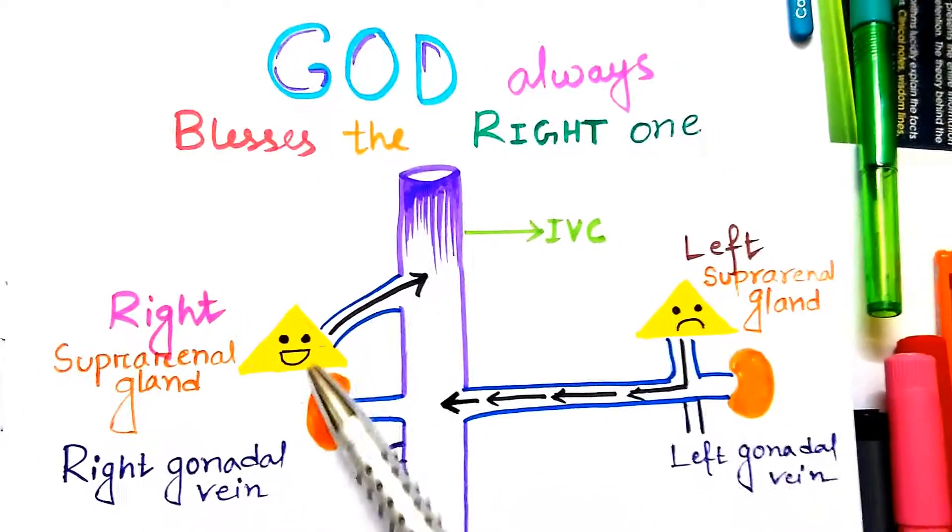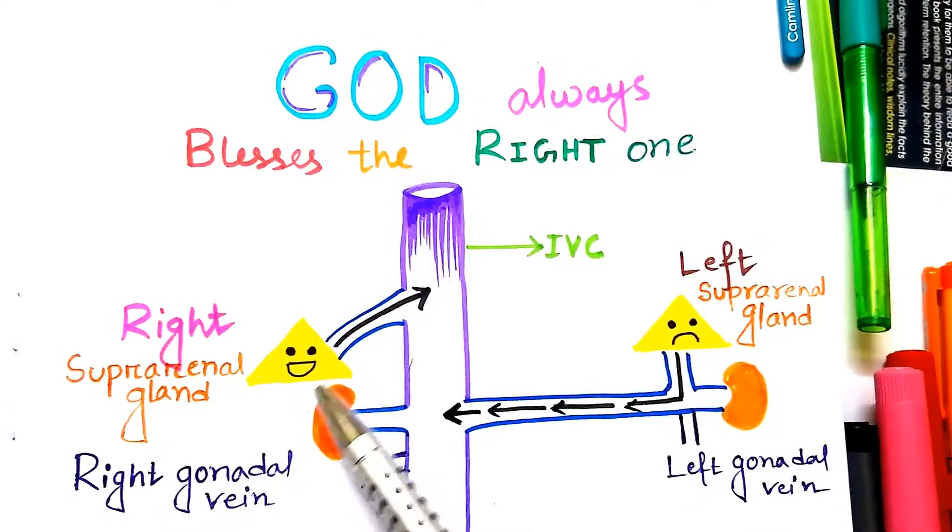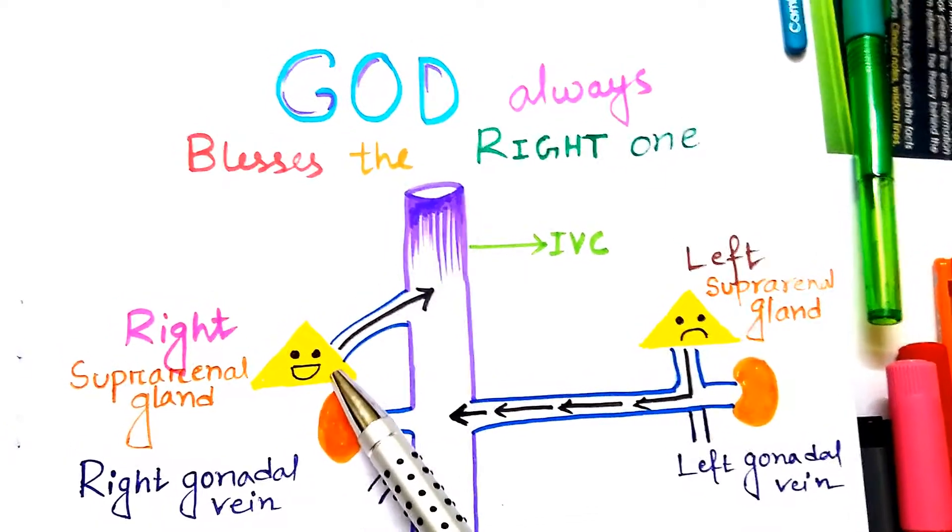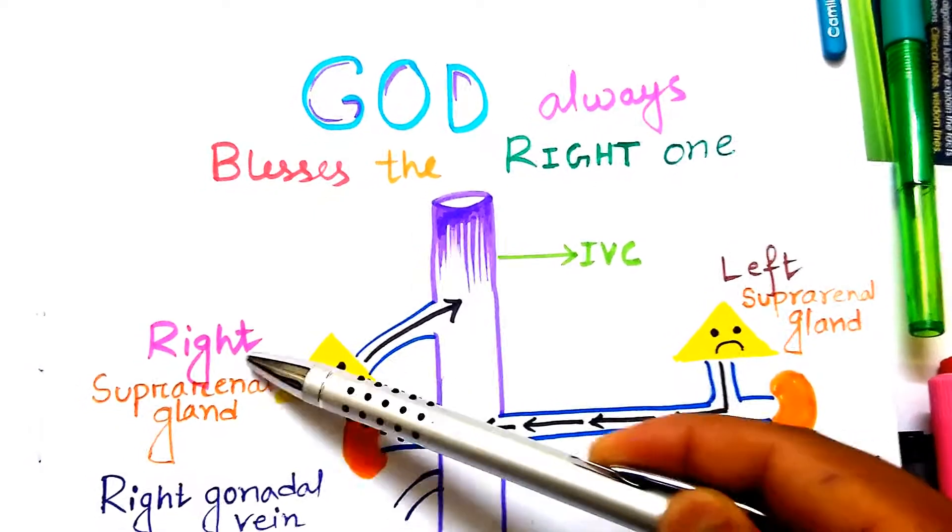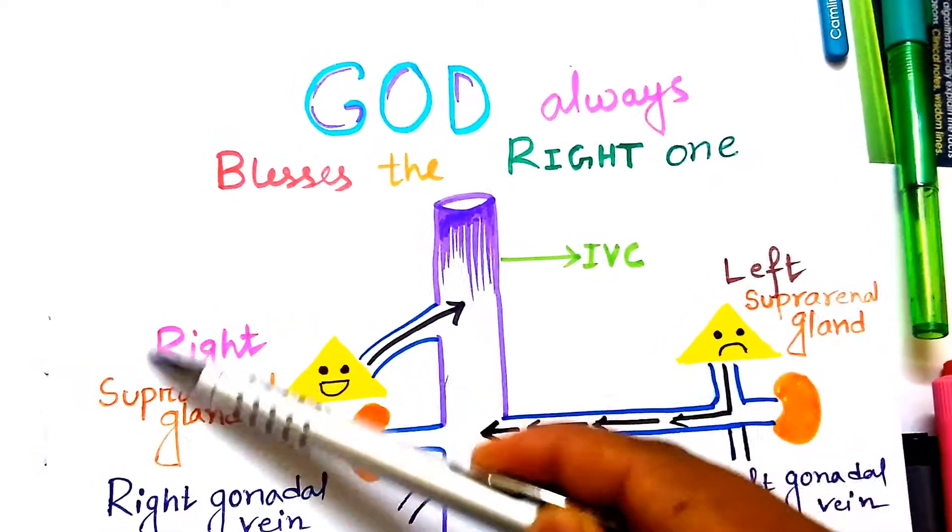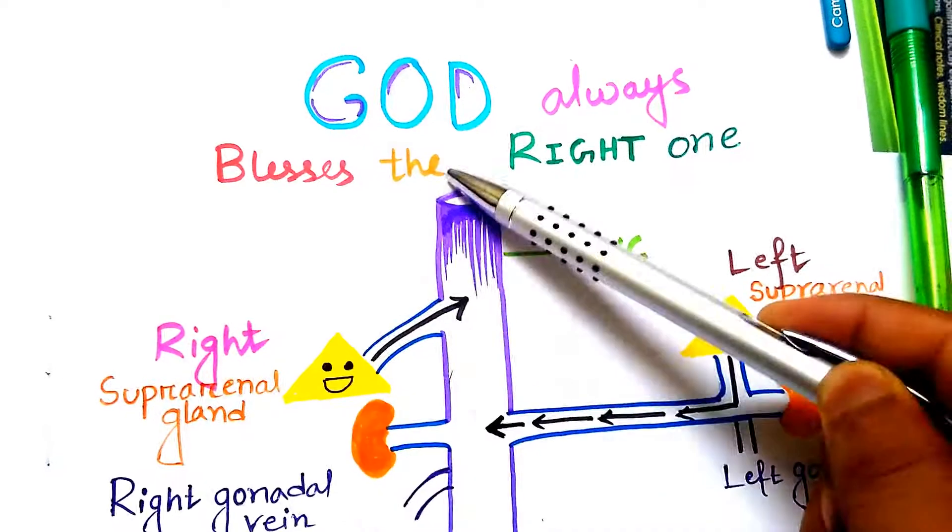Here we can see two suprarenal glands. The right one is happy because it is blessed by God - because it is the right one. He does the right thing always, so he is blessed by God.